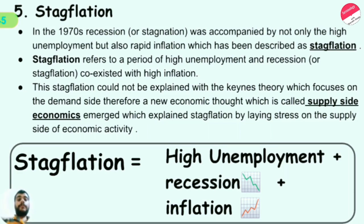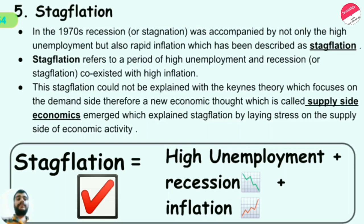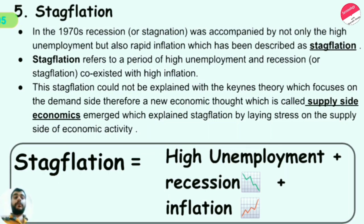Stagflation, mathematically, is equal to high unemployment plus recession plus inflation. There is high unemployment — that is, there are fewer employment opportunities. There is recession, because growth of the GDP is declining or is in negative. There is inflation — high prices of basic goods and services.